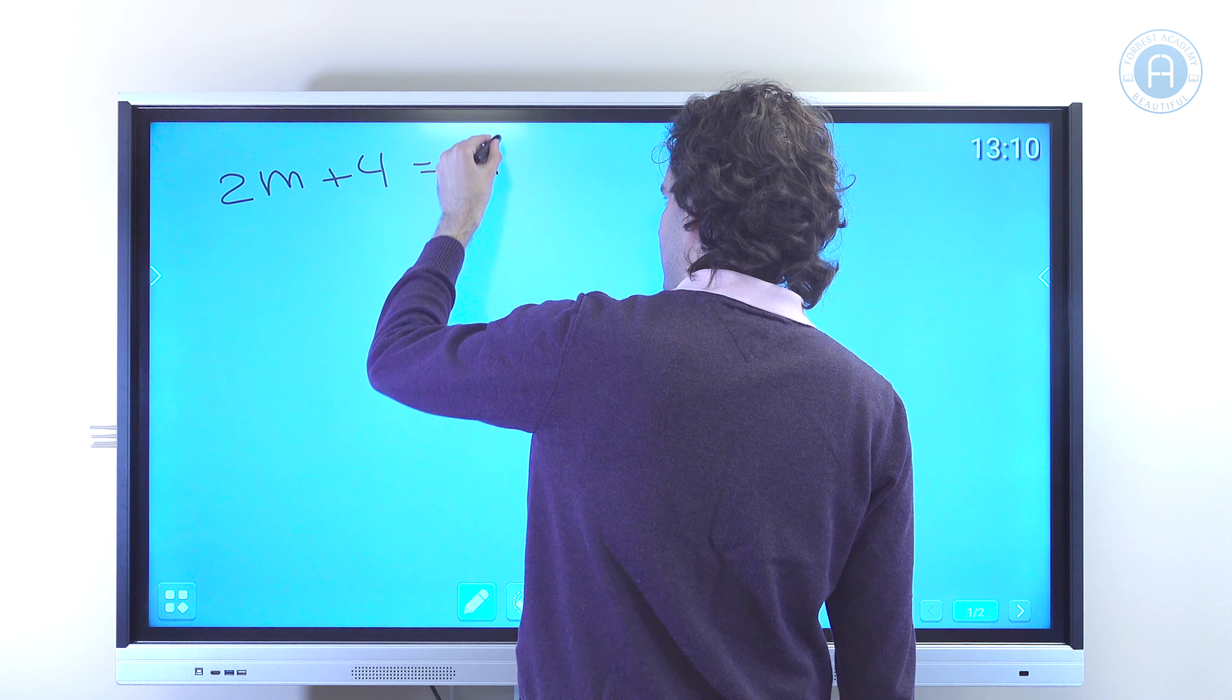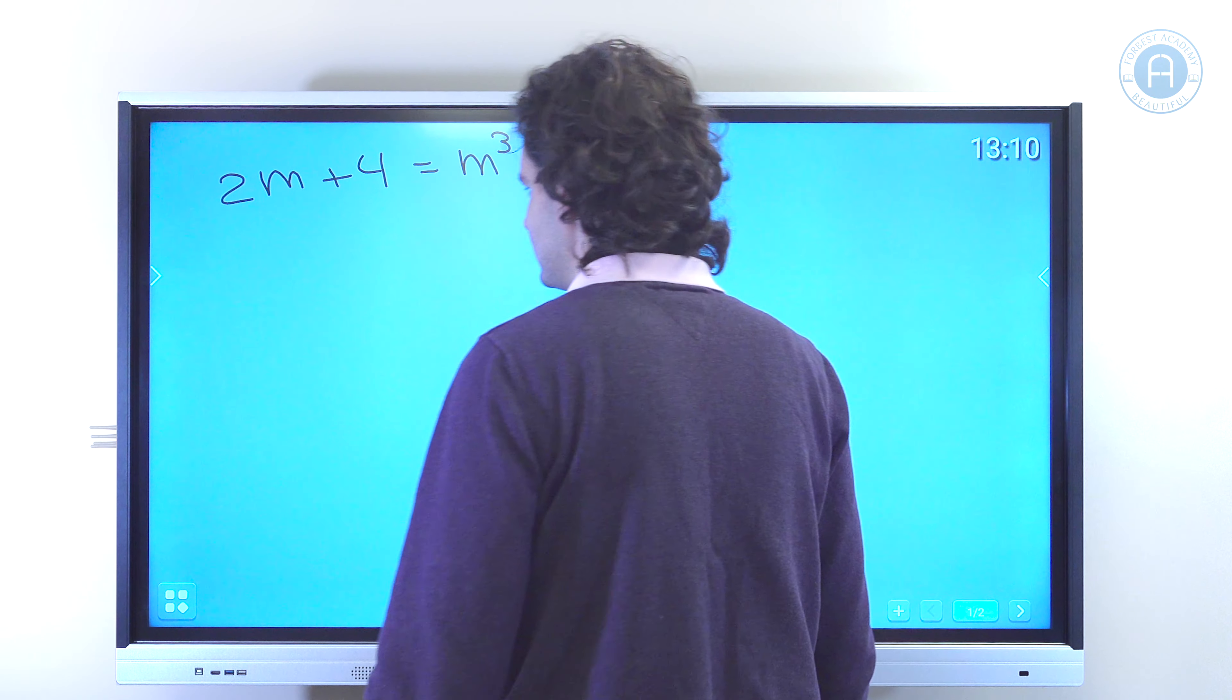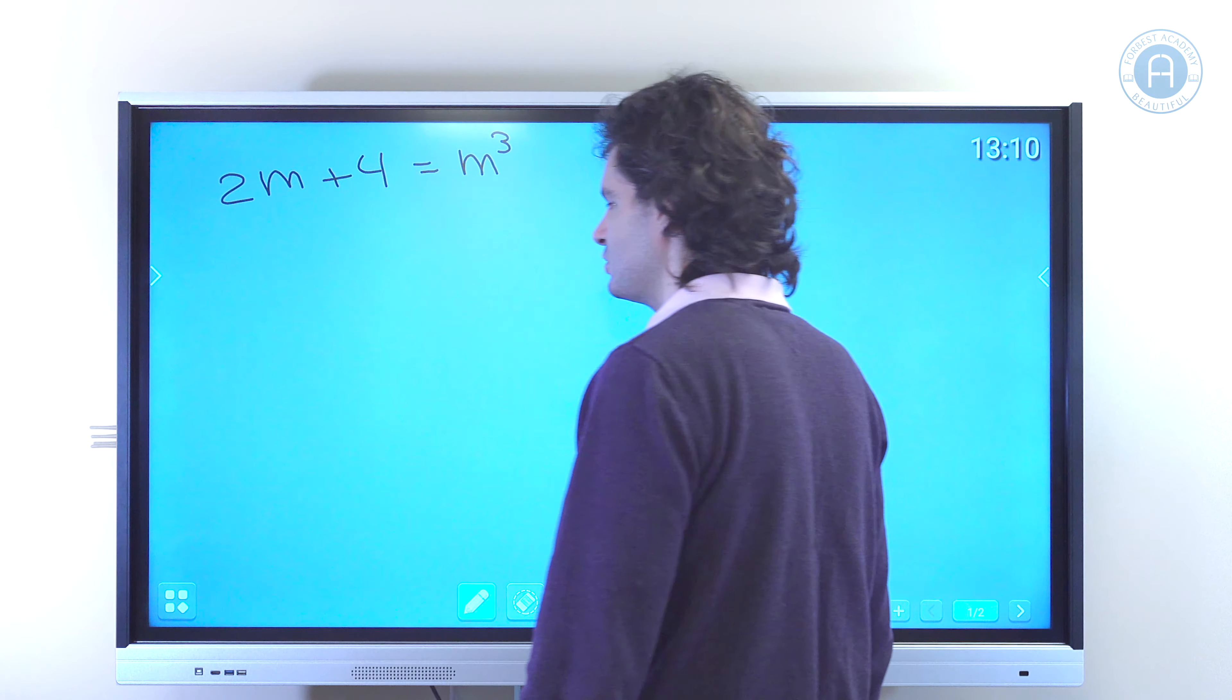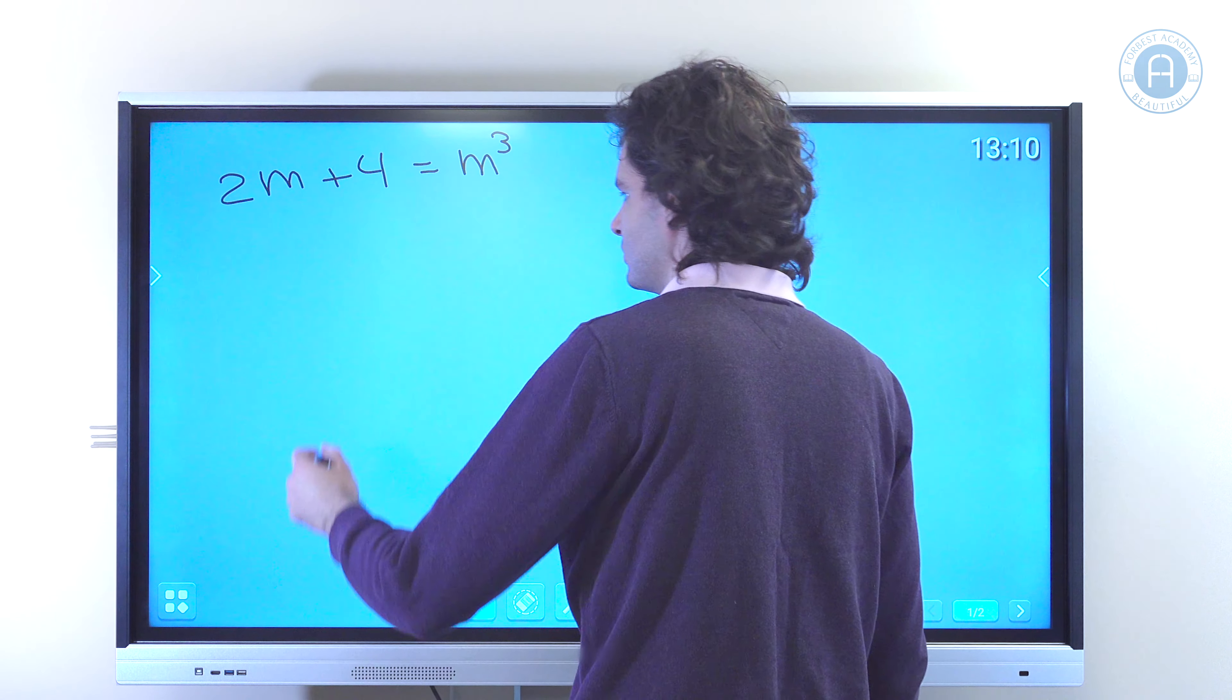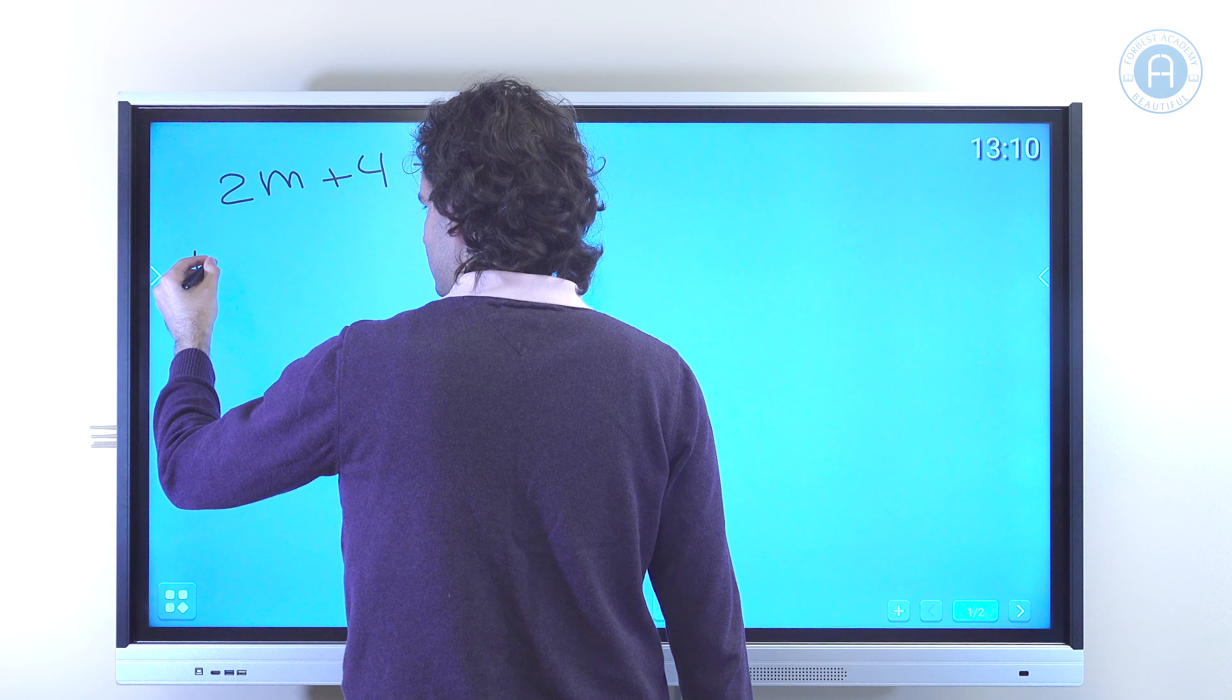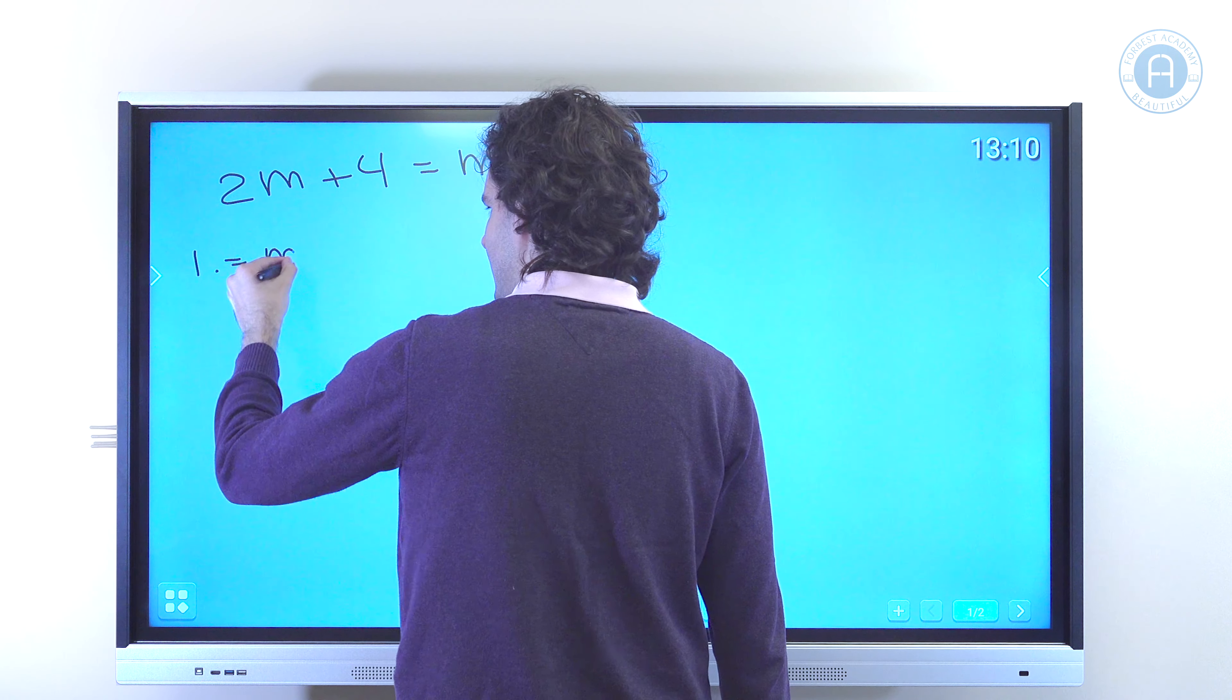Well, let's try choice by choice until we get the right answer. So we start with the first choice, which is 1. So that means m has the value of 1.